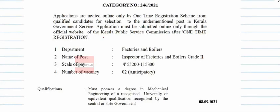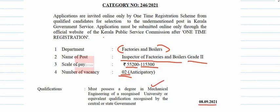Kerala Public Service Commission had invited applications for the post of Inspector of Factories and Boilers Grade 2 for the Department of Factories and Boilers, with a scale pay of ₹55,200 to ₹1,500 and an anticipatory vacancy of 2. The basic qualification required was a degree in Mechanical Engineering, with the last date of application in 2021. An examination is expected in 2022, and the number of vacancies will vary from 5 to 10.